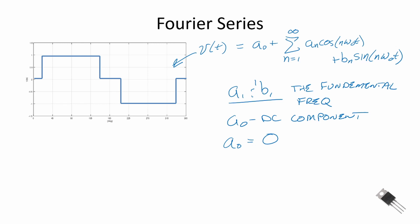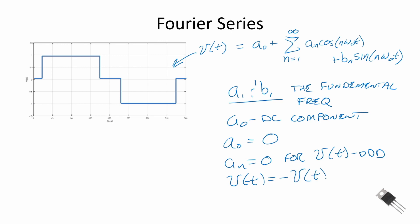Recall from your signals class that if the function is an odd function, the a_n's will equal zero. An odd function is one where V(−t) equals minus V(t) — it has symmetry about the diagonal axis. For even functions, the b_n's are zero. The modified sine wave is set up as an odd function, so the b_n's will have a value and the a_n's are equal to zero.